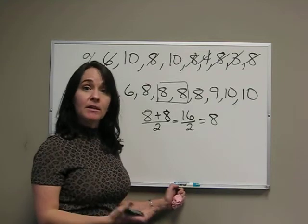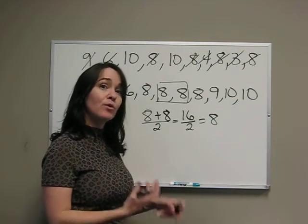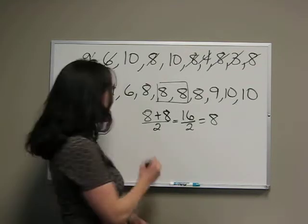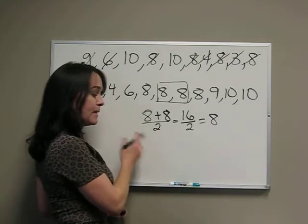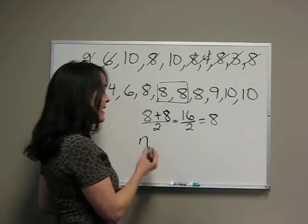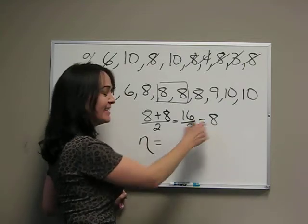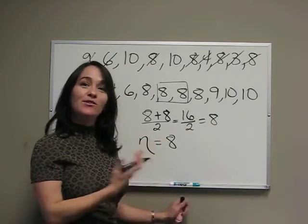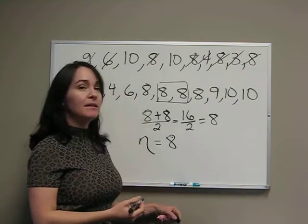Now, this is a population, so we use population parameter symbols, Greek letters. So what we're going to use for the median is eta. It looks like an N with a long tail, eta, and eta is 8. So this is the median of the population.